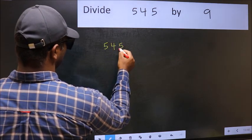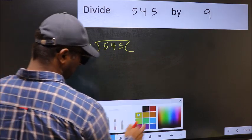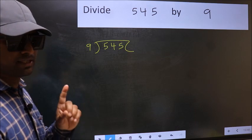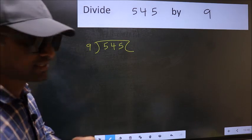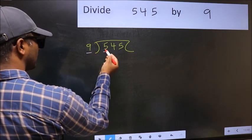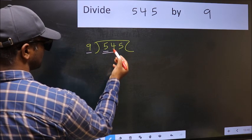545 and 9 here. This is your step 1. Next. Here we have 5 and here 9. 5 is smaller than 9, so take 2 numbers, 54.